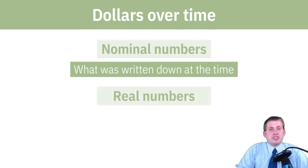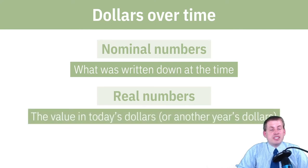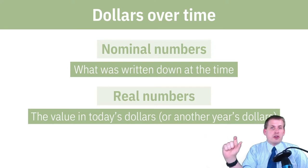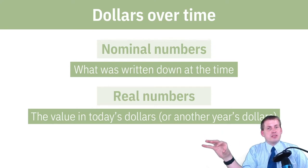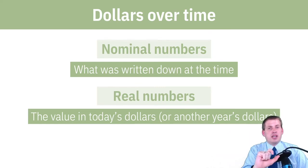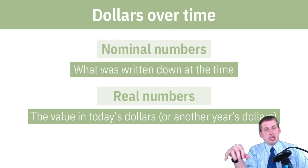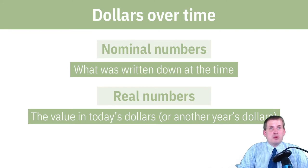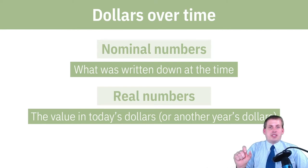Instead of thinking about nominal numbers, you can think about real numbers — the value adjusted into today's dollars, or any other year's dollars. If you bought a house in 1950 for $15,000, there are ways of scaling that $15,000 up to 2020 values. It's going to be in the hundreds of thousands — it's not going to be wildly more expensive compared to today, but probably somewhat more expensive. It goes from $15,000 to some high value, to a slightly higher value today.